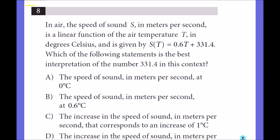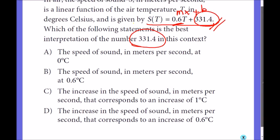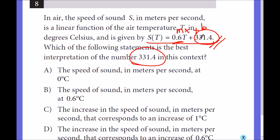In air, the speed of sound s in meters per second is a linear function of the air temperature t in degrees Celsius. And it is given by s of t equals 0.6t plus 331.4. Which of the following statements is the best interpretation of the number 331.4 in this context? So this is a linear function again. It is mx plus b. So this is what you start with, initial fee. m was the rate of change 0.6. But if you are interested in 331.4, it was also the y-intercept, so when x is 0.